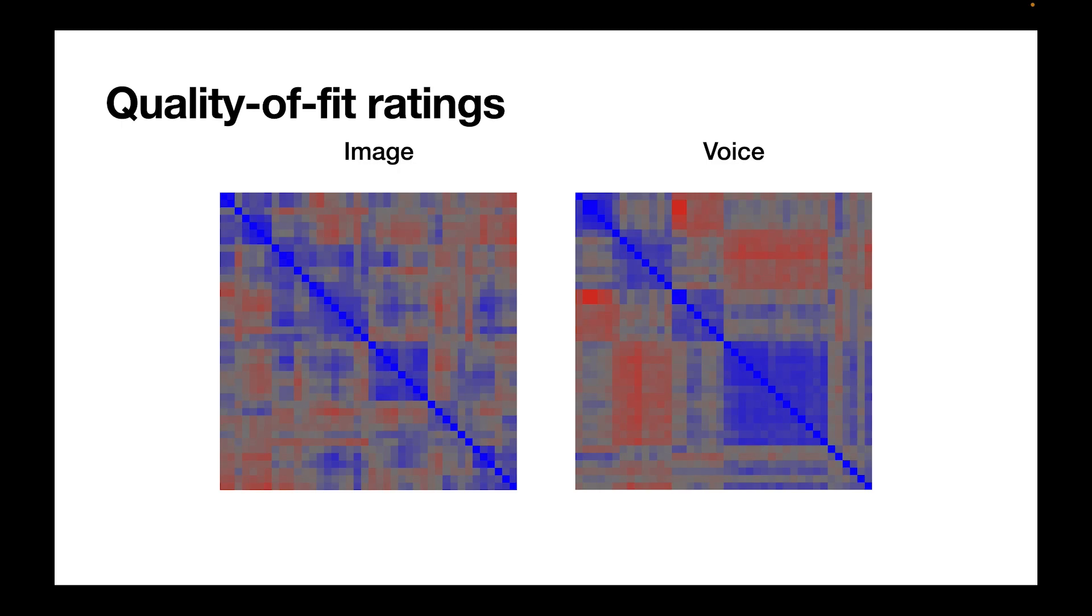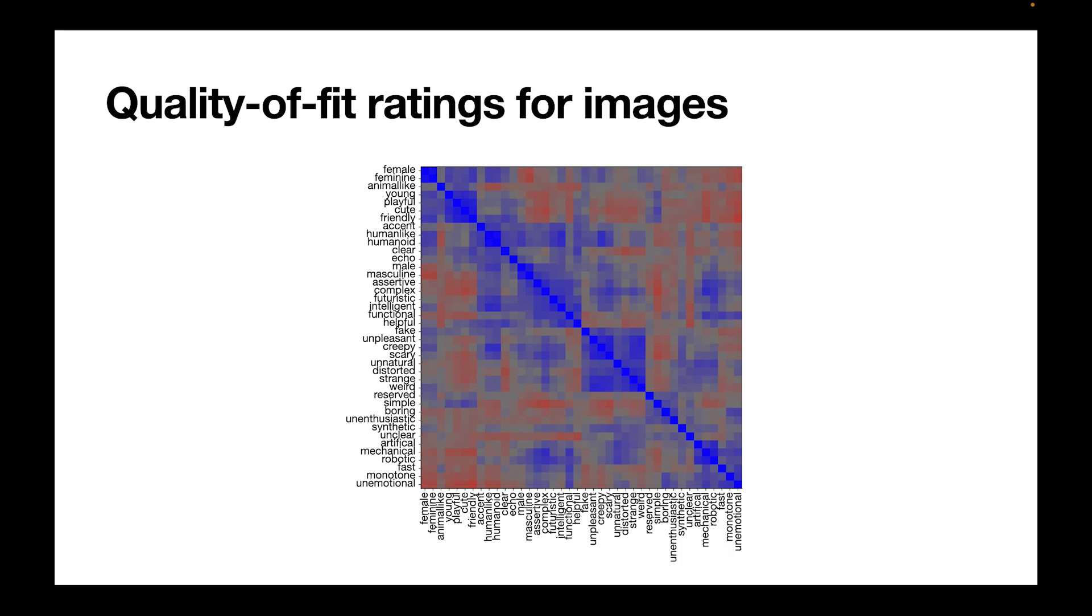And what we can see is that we get a very rich correlational structure among the dimensions for each of the modalities. So let's zoom a bit in on each of the modalities. For images, we can see that generally items with a similar meaning, such as female and feminine, have strong positive correlations. And antonyms tend to have negative correlations.